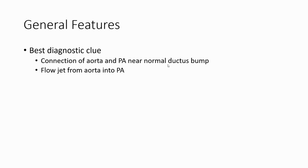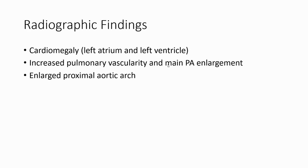What is the clue to diagnosis of PDA? We need to find the connection between the aorta and pulmonary artery and define the flow jet from the aorta into the PDA into the pulmonary artery. On radiographs, we can find cardiomegaly, left atrium and left ventricle enlargement, increased pulmonary vascularity, main pulmonary artery enlargement, and a prominent proximal aortic arch.